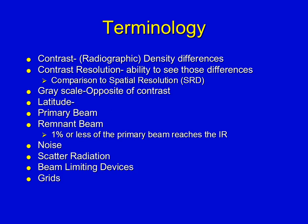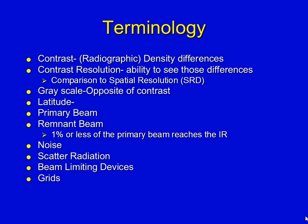Beam limiting devices are anything that contains your beam to a specific size — collimators and diaphragms are different types. Grids are a device we use to clean up scatter after it's created; we place the grid between the image receptor and the patient to remove some scattered radiation before it strikes the image receptor.